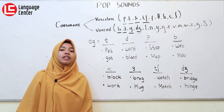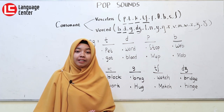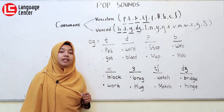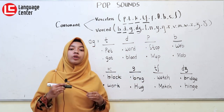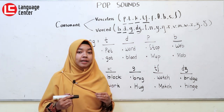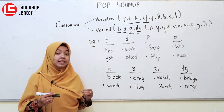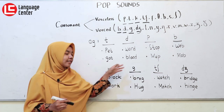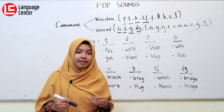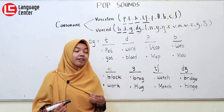Yang kedua, ada suara D. For the example, yaitu ada 'word', 'word'. Oke, D — 'word'. Ada kata 'blood', 'blood'.